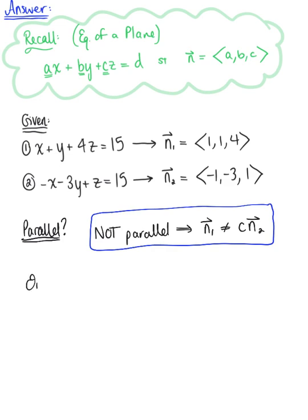What about orthogonal? How can we determine if the two planes are orthogonal? Well, we need to take the dot product. So we're going to take the dot product of the first normal vector with the second normal vector, and we'll see what happens.